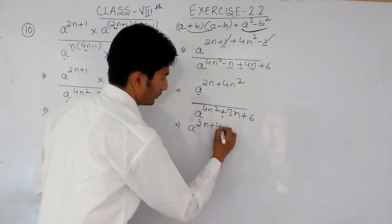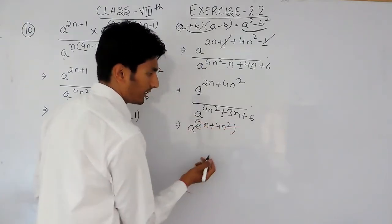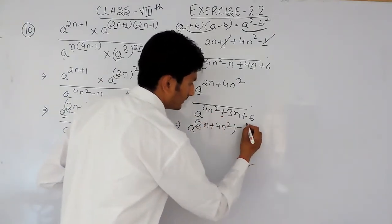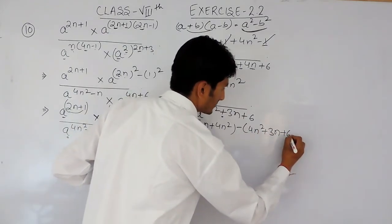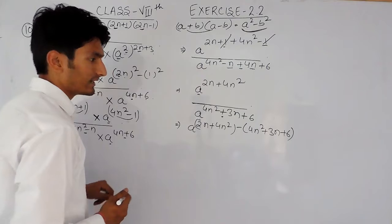This is the first power, and subtracted, 4n square plus 3n plus 6, this is our second power.